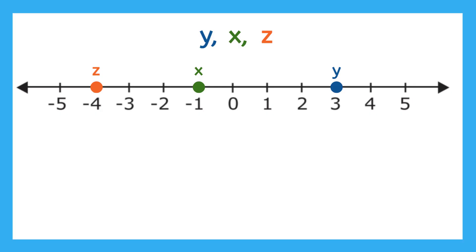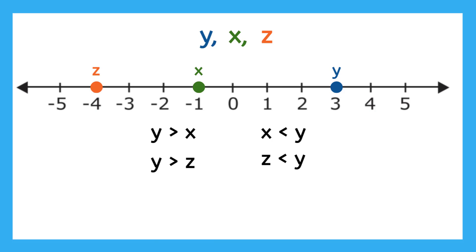So now that we know the order of these numbers, we can describe their relationships to each other. One way that we can describe their relationships is by writing inequalities. What is one way to compare y and x? Like y is greater than x, and it would also be true to say x is less than y. What else is y greater than? Yeah, y is also greater than z. So that means we can also say z is less than y. Now what can you say about z and x? X is greater than z, or z is less than x.